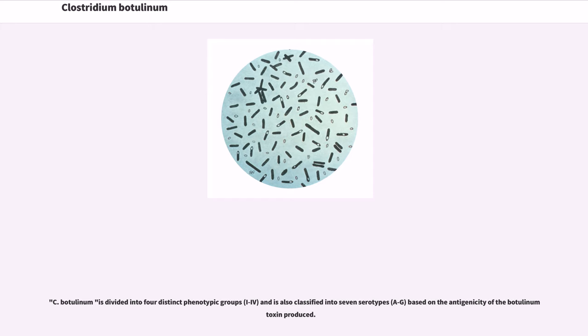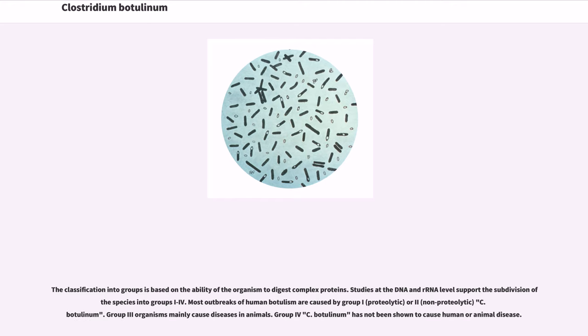C. botulinum is divided into four distinct phenotypic groups and is also classified into seven serotypes based on the antigenicity of the botulinum toxin produced. The classification into groups is based on the ability of the organism to digest complex proteins. Studies at the DNA and RNA level support the subdivision of species into groups I through IV. Most outbreaks of human botulism are caused by group I or II C. botulinum. Group III organisms mainly cause diseases in animals. Group IV C. botulinum has not been shown to cause human or animal disease.